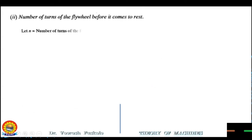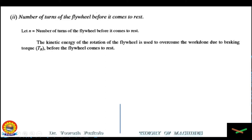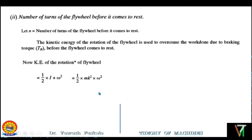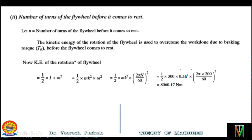Next, let us find the number of turns N of the flywheel before it comes to rest. The kinetic energy of rotation of the flywheel is used to overcome the work done by the braking torque. The kinetic energy of rotation is given by (1/2)·I·omega², where I = m·k². Substituting omega = 2πN/60 and the values m = 300 kg, k = 0.35 m, N = 200 rpm, we get the kinetic energy of rotation as 8060.17 Nm.